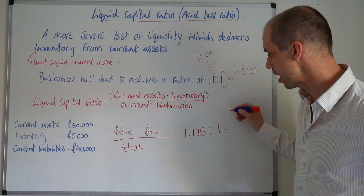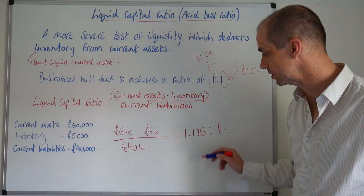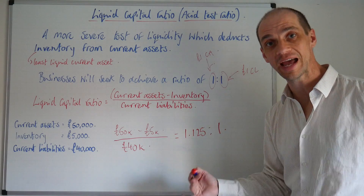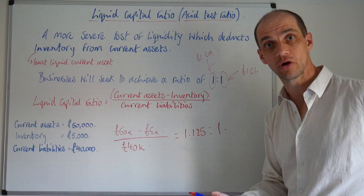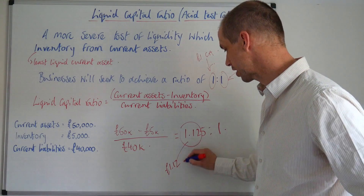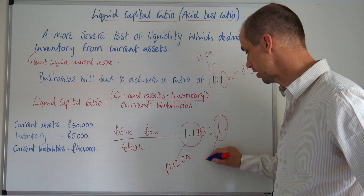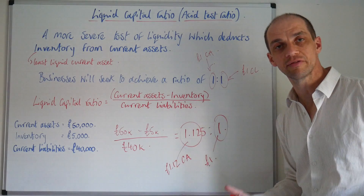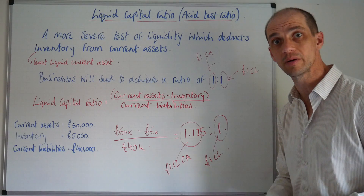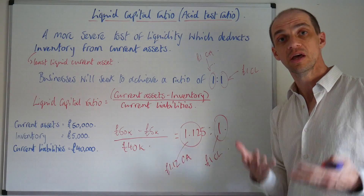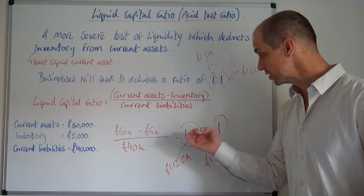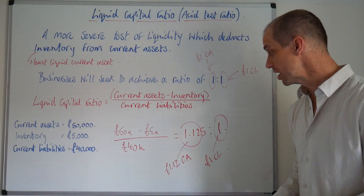From this calculation we end up with a ratio of around £1.12 — that is, £1.12 of current assets for every £1 of current liabilities. So would we have a concern about this business and its ability to repay its short-term debts? Clearly not, because they do have sufficient current assets minus inventory to repay those current liabilities.